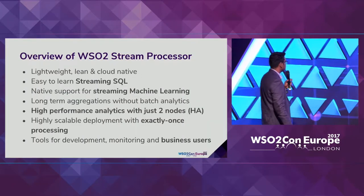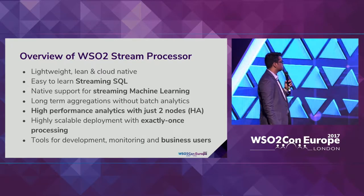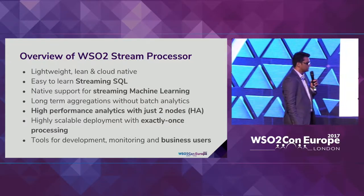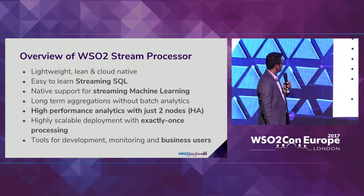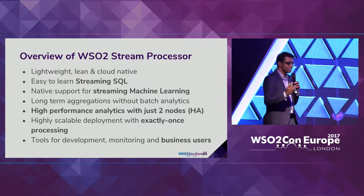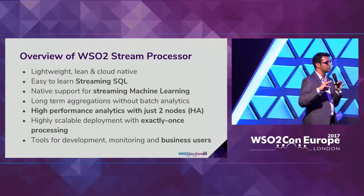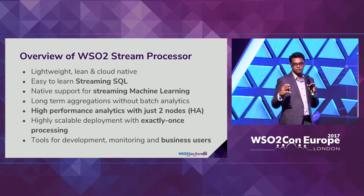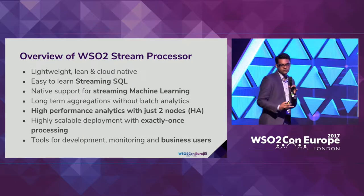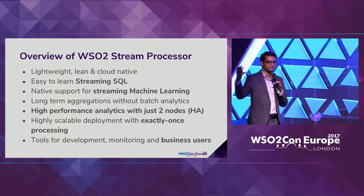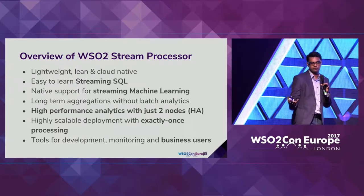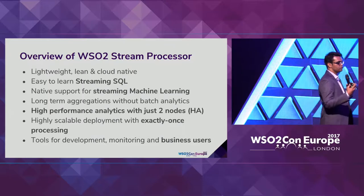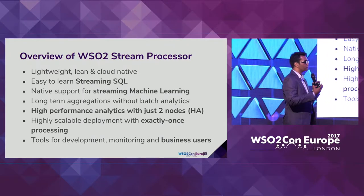WSO2 Stream Processor is a lightweight, lean, cloud-native product with an easy-to-learn streaming SQL. It has native support for streaming machine learning and high-performance processing with just two nodes. We are the only vendor who provides a highly available system with just two nodes — all other vendors require at least five nodes for a real production deployment. This minimizes infrastructure cost and aligns with microservices thinking.